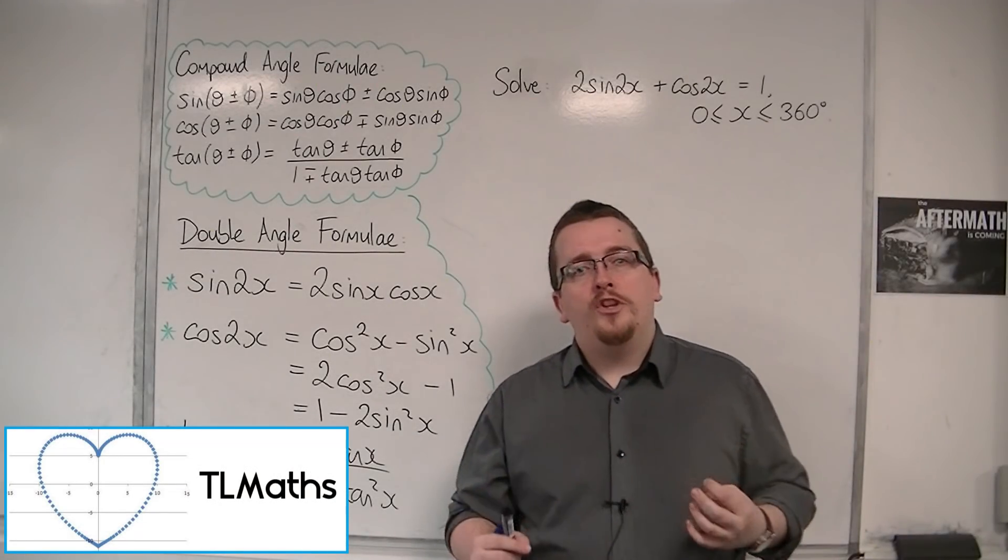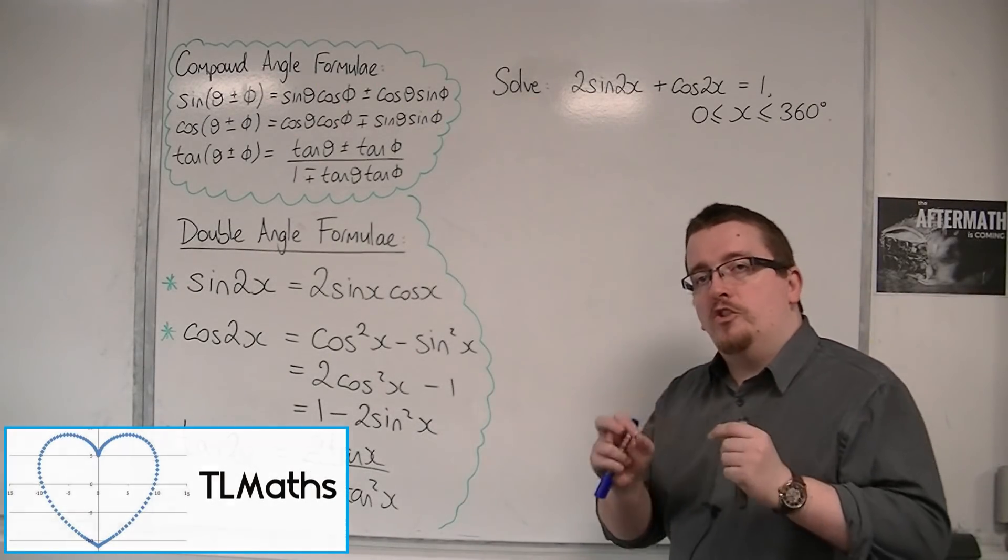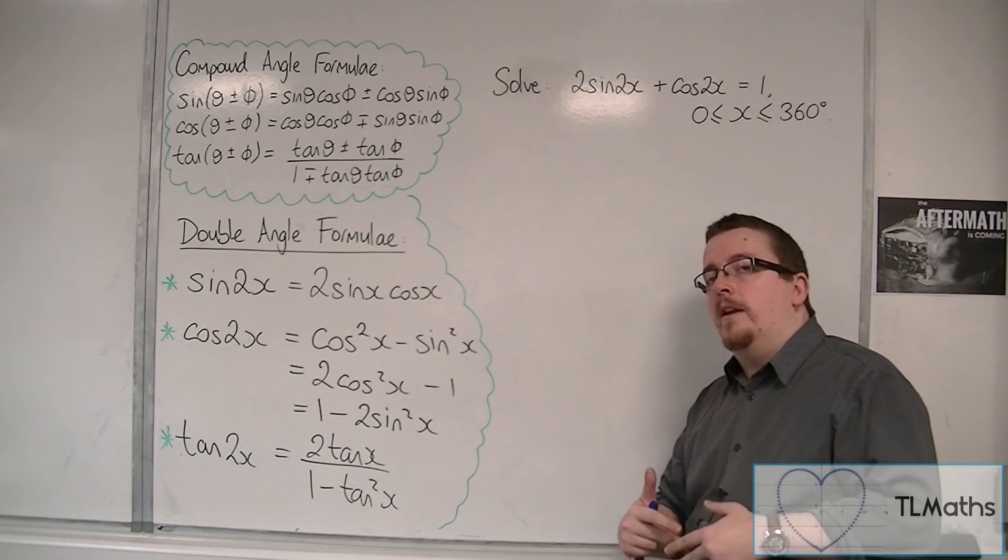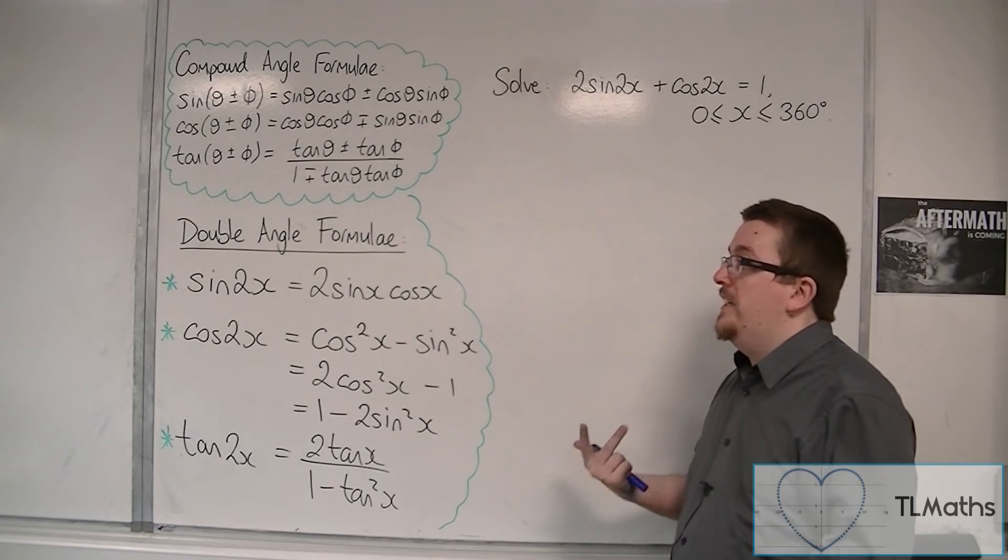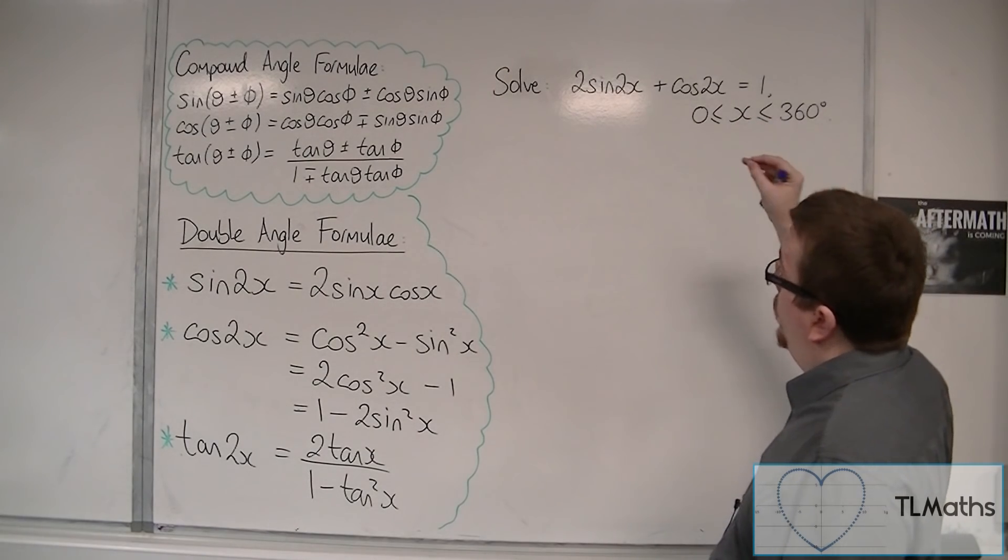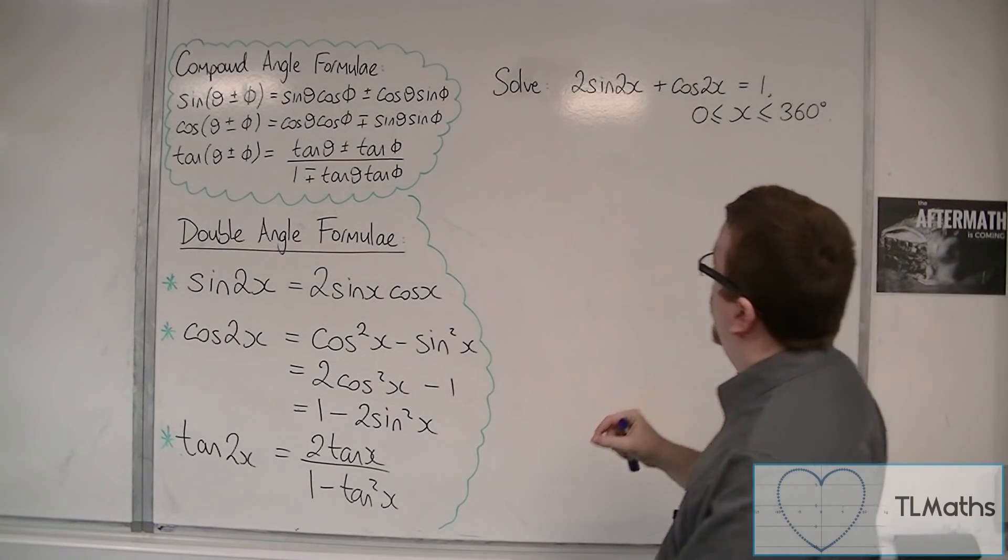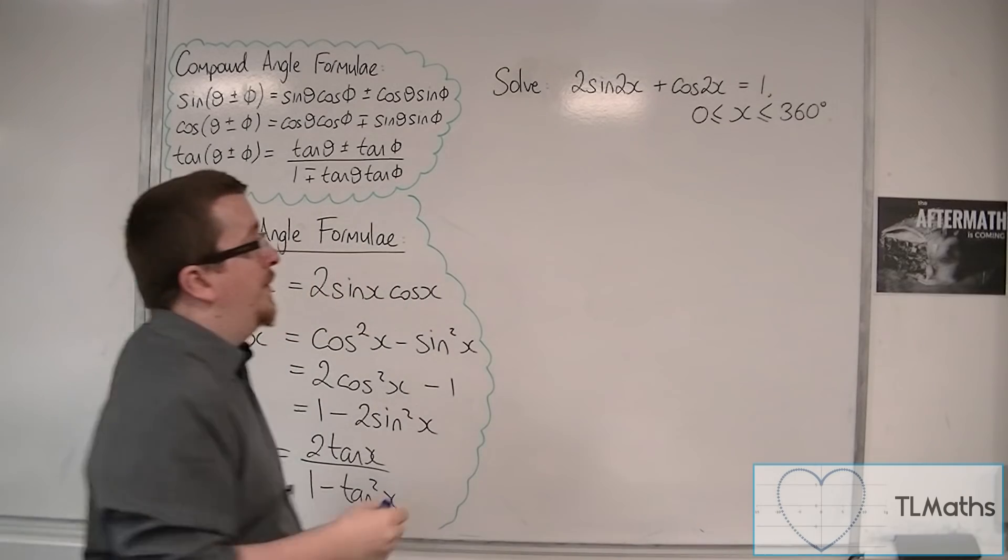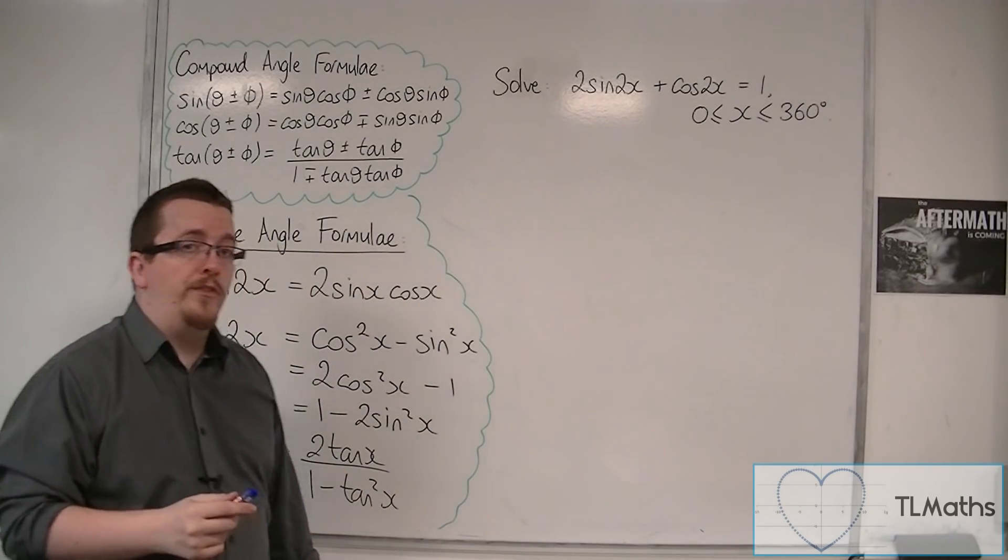In this video, I want to show you how to solve a trigonometric equation using one or two of the double angle formulas. Here is the equation: 2sin(2x) + cos(2x) = 1, and I want to solve this between 0 and 360 degrees.